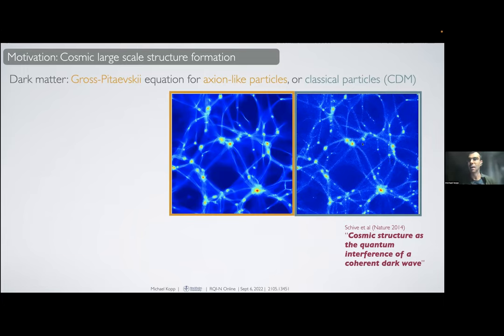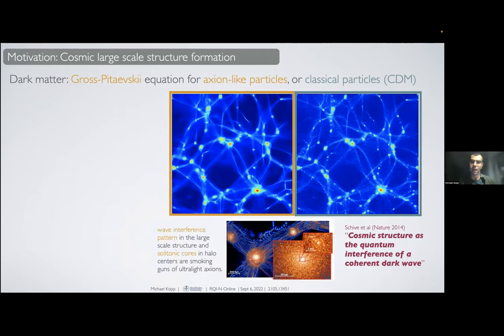Here you see snapshots of a cosmological simulation showing you the cosmic web formed by the gravitational attraction of dark matter. On the right you see how it looks like for the standard cold dark matter particle, and on the left it's the classical field description for axion-like particles. You can see differences here, there are some fringes at these filaments.